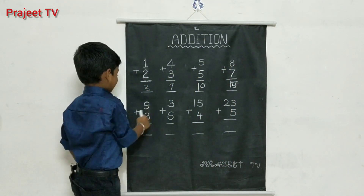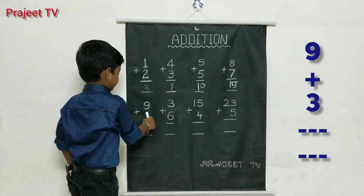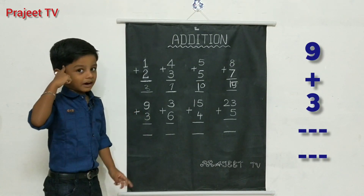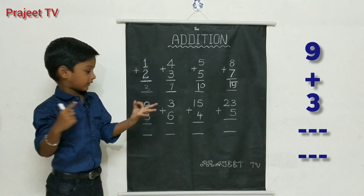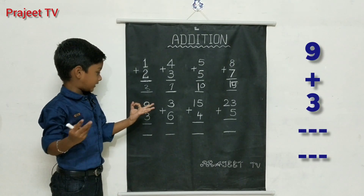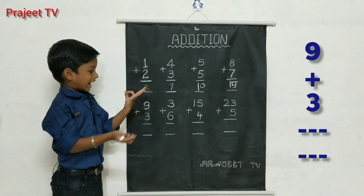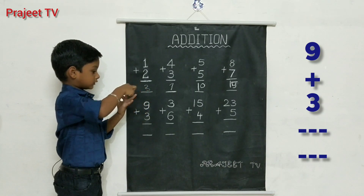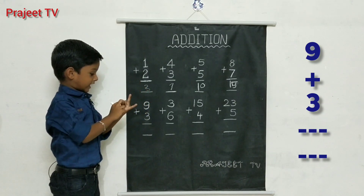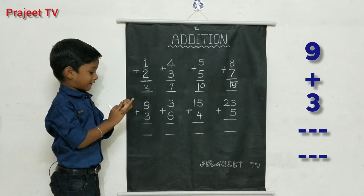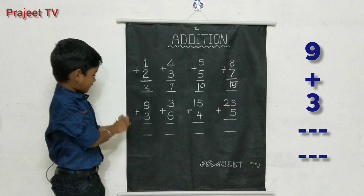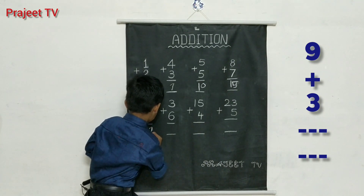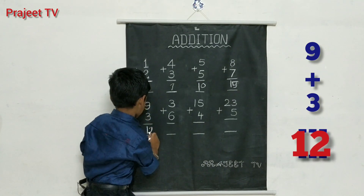Nine plus three. Nine in the mind, three in the fingers. Nine after ten, eleven, twelve. Answer: twelve.